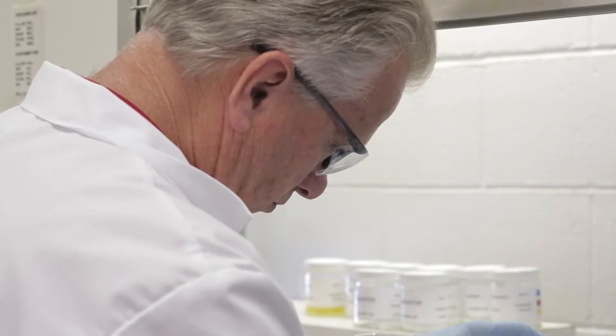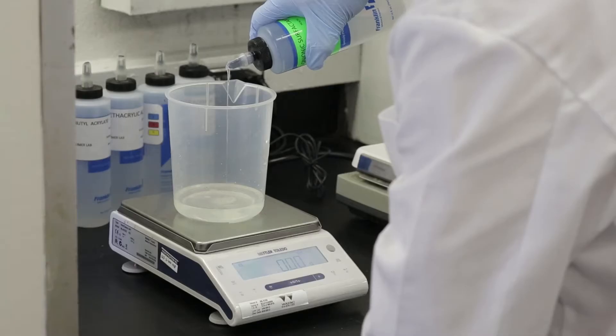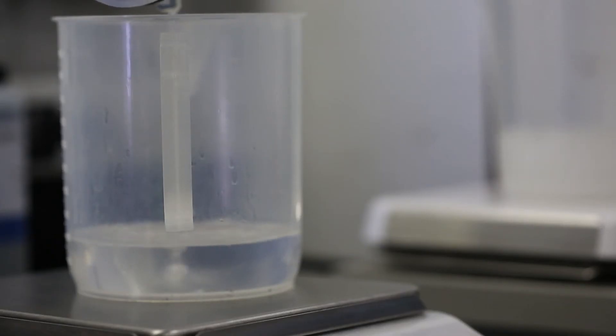First, we weigh the ingredients – water, monomers, stabilizers and initiators, for example – in an emulsion polymerization. We can vary these and other ingredients to produce a vast array of pressure-sensitive emulsion products.